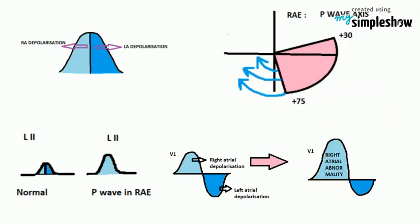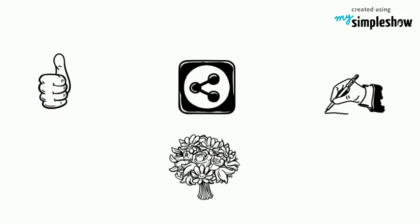P-wave axis will be more than 75 degrees in right atrial enlargement. To be continued. If you like my channel, please like, share, and subscribe. Thank you.